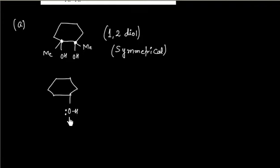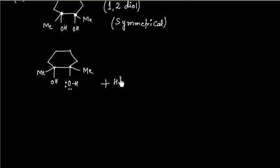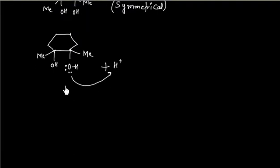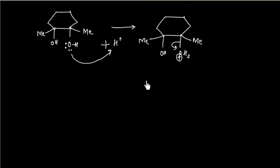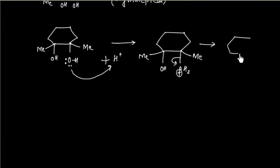We have OH, and this lone pair reacts with H⁺ — the OH is acting as a base and H⁺ is acting as an acid. Now OH₂⁺ is a good leaving group. In the next step we can lose one H₂O molecule to get the carbocation. This is a tertiary carbocation.